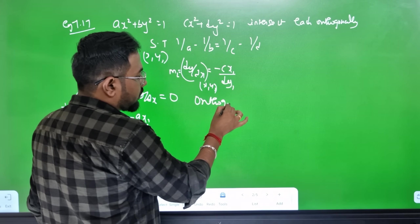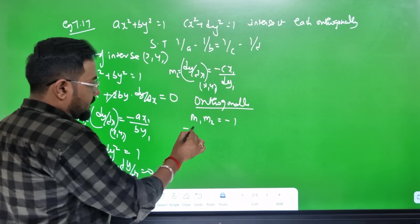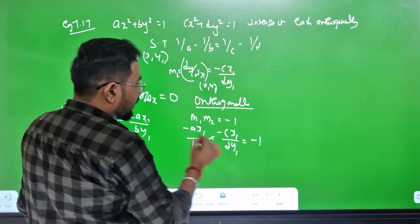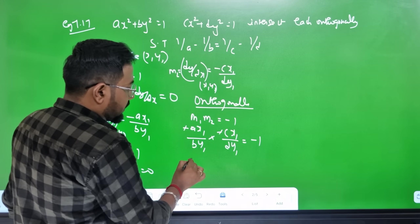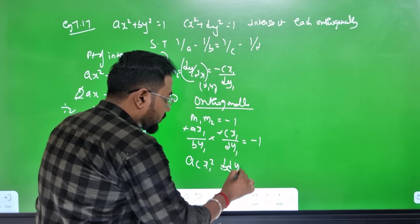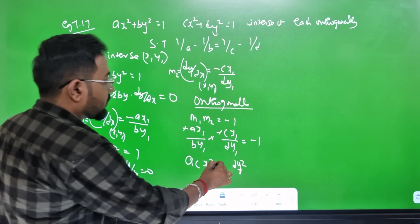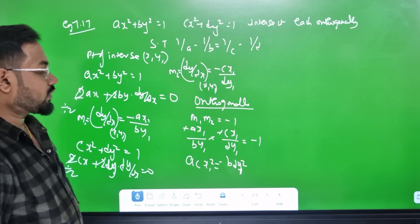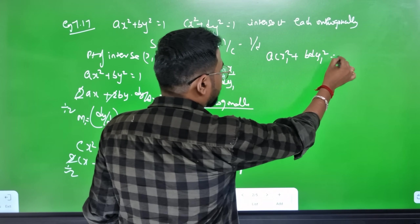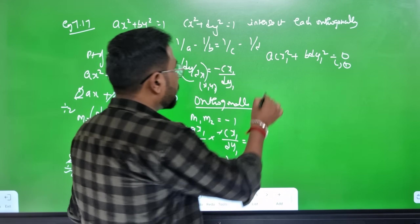For orthogonality (perpendicular curves), M1 × M2 = −1. Substituting: (−Ax1/By1) × (−cx1/dy1) = −1. The two negatives make a positive, so Acx1² = Bdy1², giving Acx1² − Bdy1² = 0.